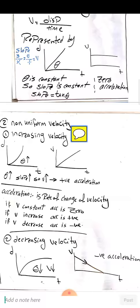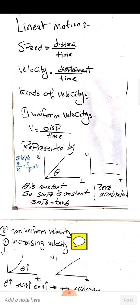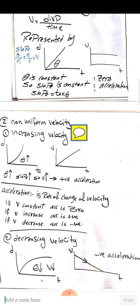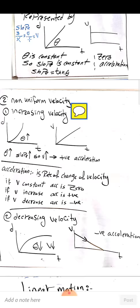To summarize linear motion: uniform velocity has a constant θ in displacement-time and zero θ in velocity-time. Increasing velocity has an increasing θ in displacement-time and a constant θ in velocity-time. Decreasing velocity has a decreasing θ in displacement-time, while velocity-time has a constant θ but in the negative direction, giving negative acceleration.